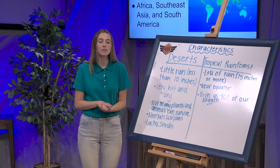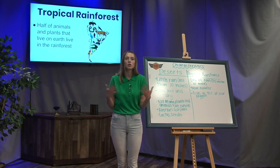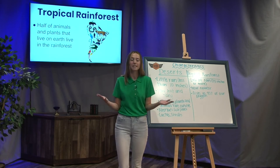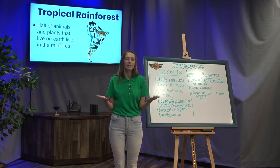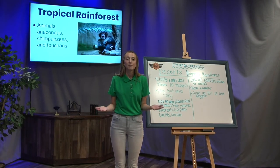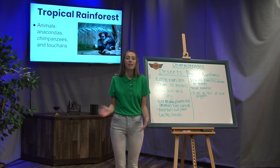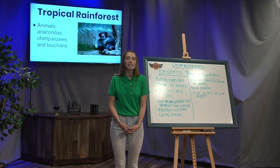Let's slide to see more characteristics of tropical rainforests. Where deserts don't have a lot of animals and plants because it's so hot and dry, tropical rainforests are kind of the opposite — they have a lot of plants and animals. Half of the animals and plants that live on this whole Earth live in the rainforest. There are so many different plants and animals that you can do some research on your own to find more.